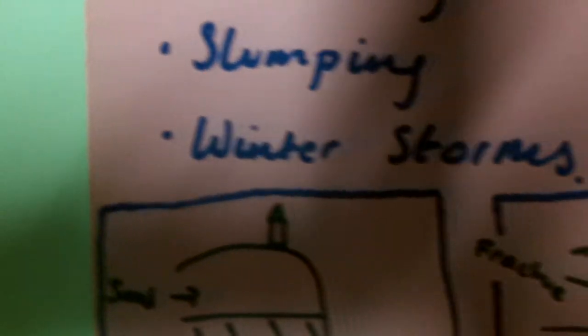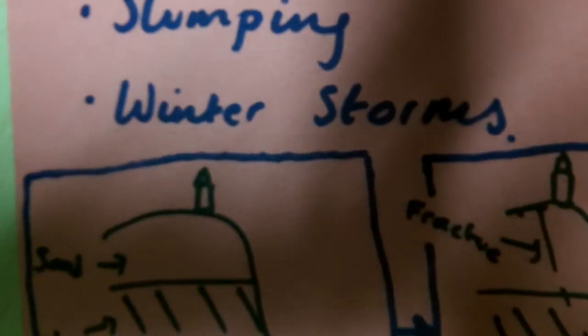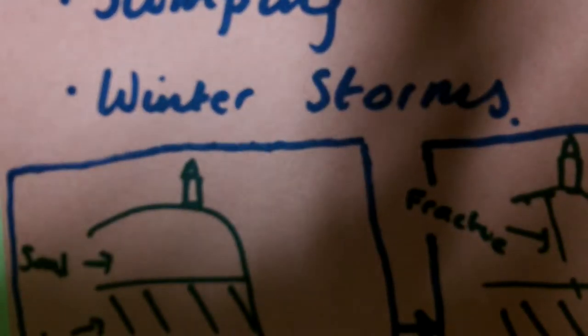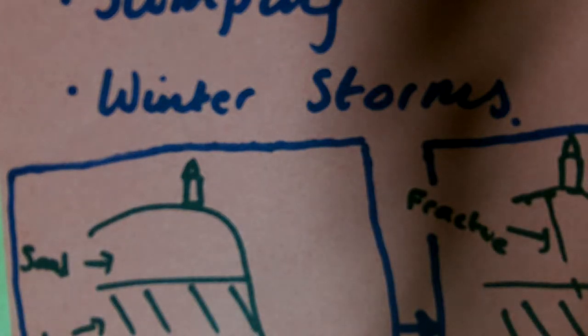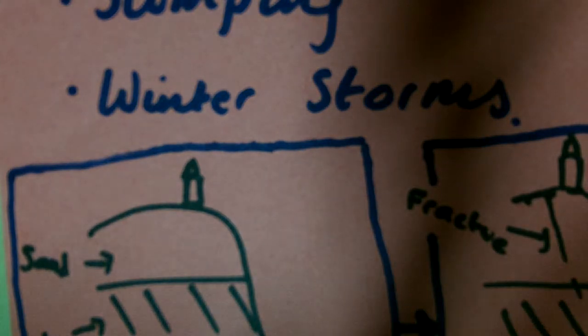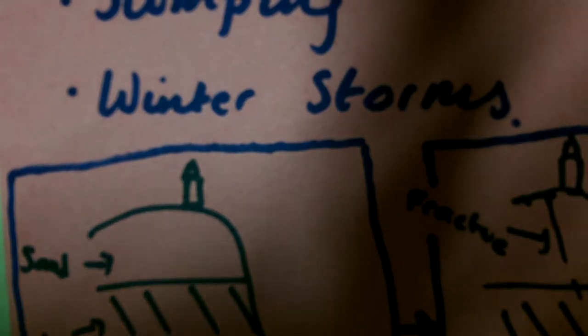Slumping happens and you can see in these diagrams. Winter storms are quite frequent and large waves hit cliffs which cause more erosion.